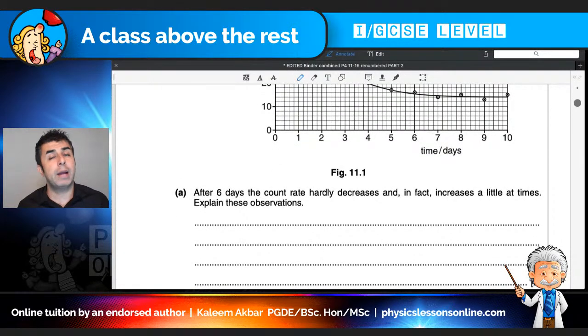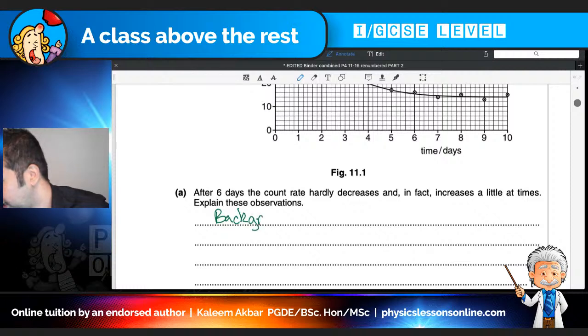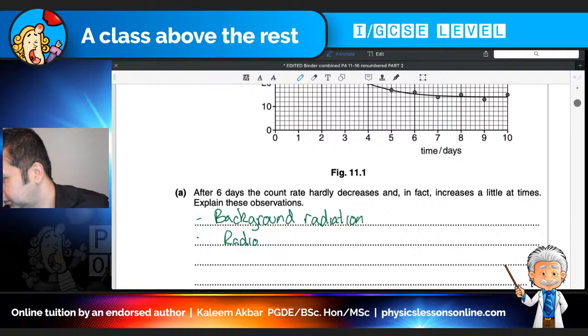So what is the answer to the first part of the question? Well basically I'm going to write down the main points and you don't need to write it exactly as I do as long as your answer contains those points. It's background radiation that causes this. So background radiation. And the radioactive decay is random.